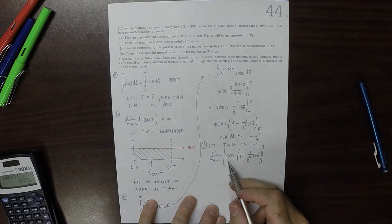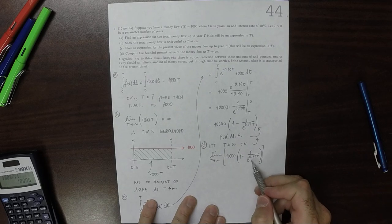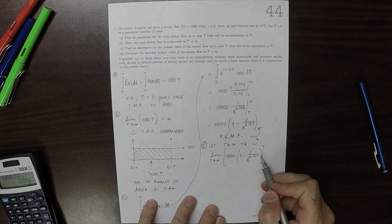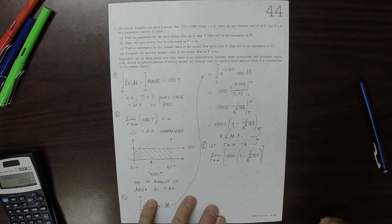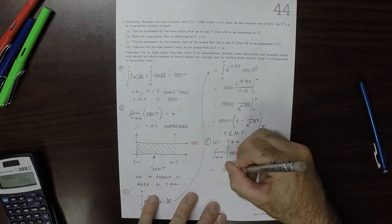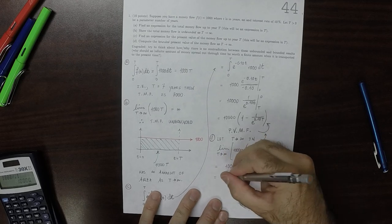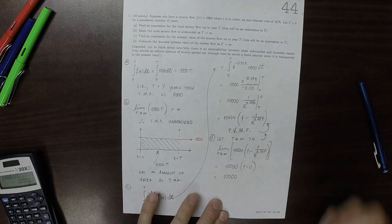Well, 10,000 is a constant, 1 is a constant. Exponential of 0.10 T goes to infinity, so 1 over that goes to 0. So the answer is 10,000 times 1 minus 0, which is to say 10,000.